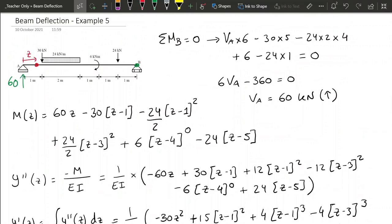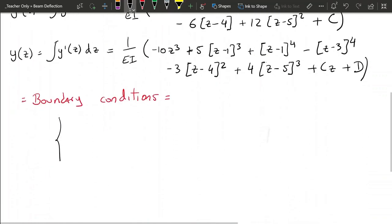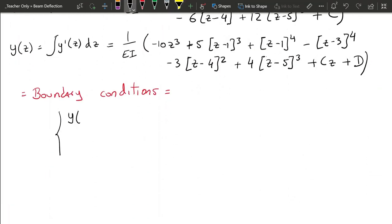the boundary conditions are the displacement at z equals 0 is 0, that is support A, and then the displacement at z equals 6 is also 0, that is support B. So we can write them as y when z equals 0 is 0, and then when z equals 6 is also 0.